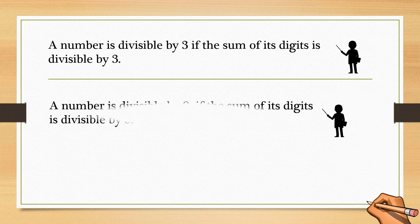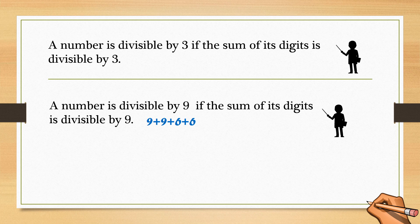If the sum of the digits is a multiple of 9, then the number is divisible by 9. For example, 99,666 — the sum of the digits is 9 plus 9 plus 6 plus 6 plus 6, which is 36. Yes, it is divisible by 9.